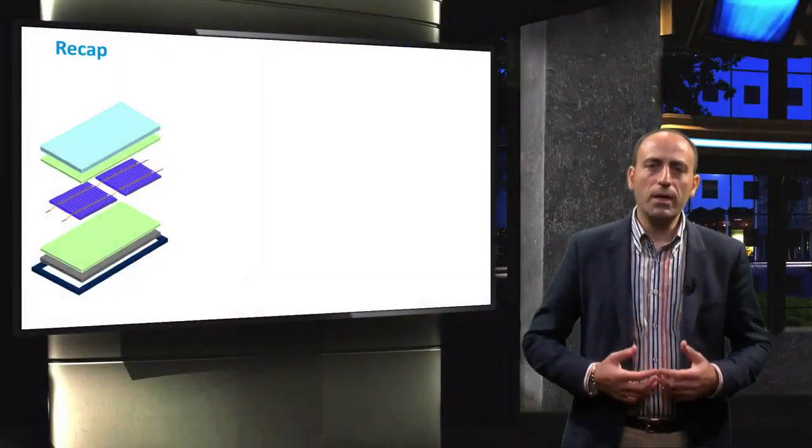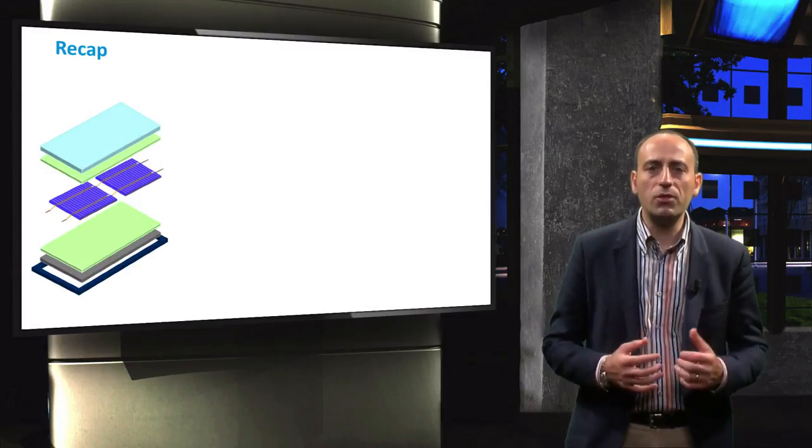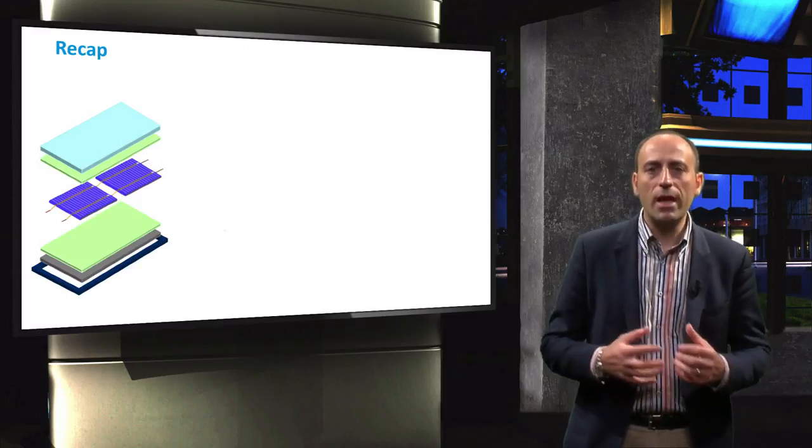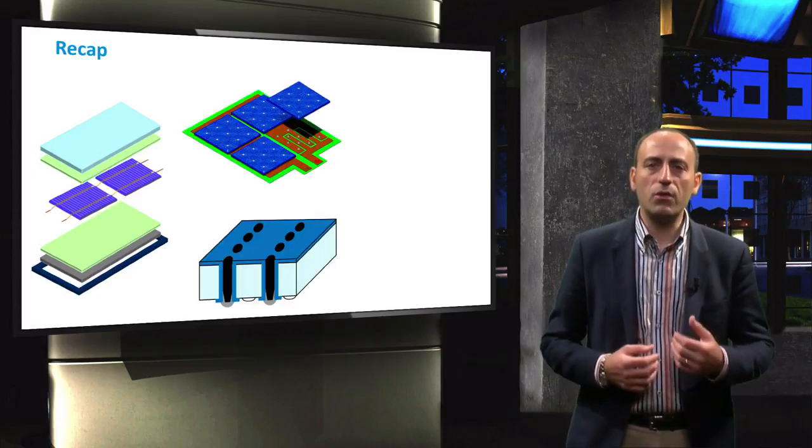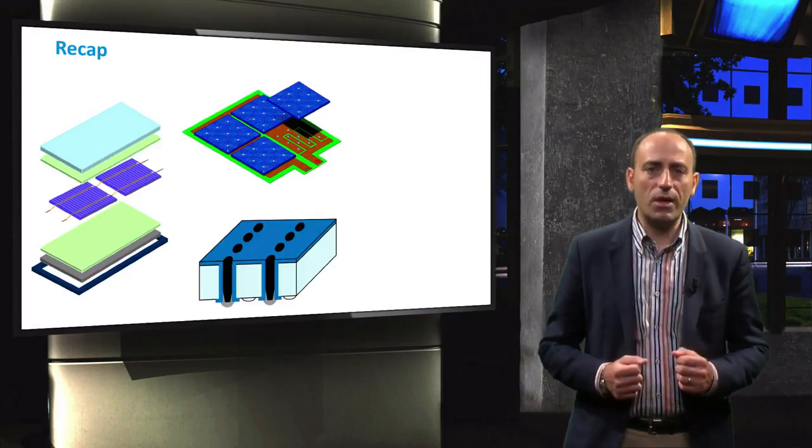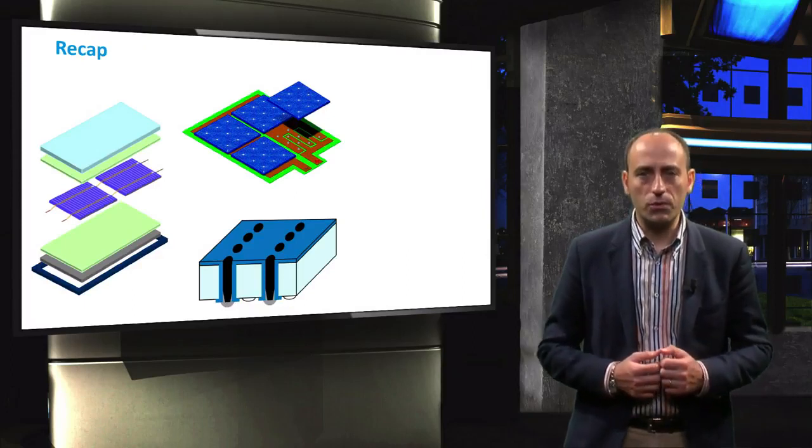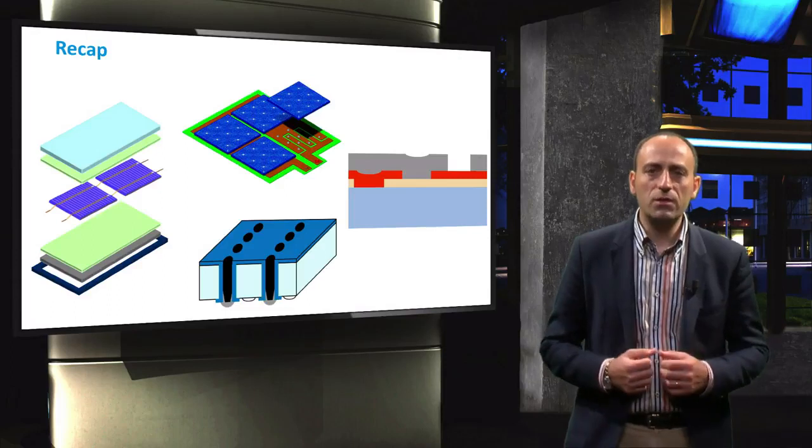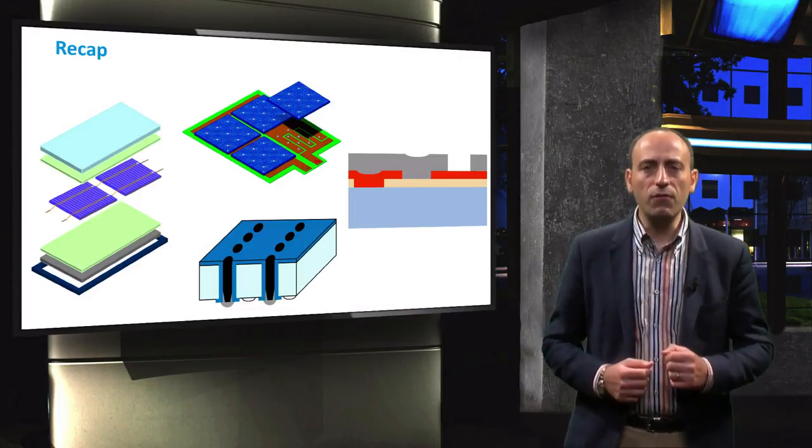To conclude, in the previous video we have seen how to fabricate a module with conventional crystalline silicon wafers by means of series and parallel interconnections. In this video, we introduced the interconnection in some advanced design concepts like emitter wrap-through and metal wrap-through modules. Finally, we discussed the monolithic integration techniques used for the interconnection of thin film solar cells.